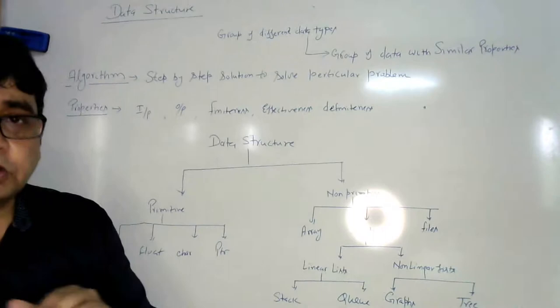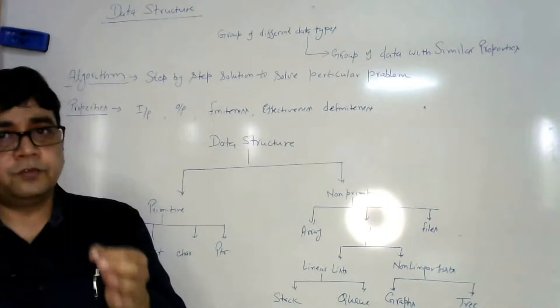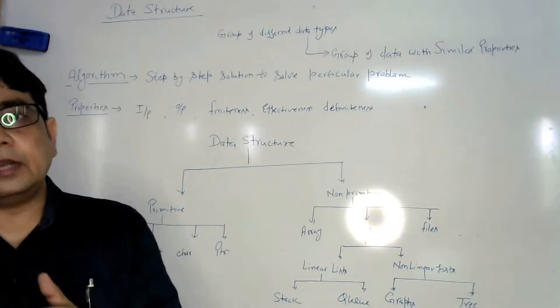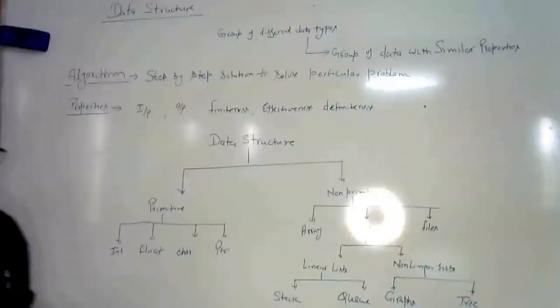What is the algorithm? How will you define an algorithm? Whenever we are going to write a program, the first step is to write an algorithm for that. Then we will write the flowchart, draw the flowchart for that problem. And after that we write the pseudocode and then we convert that pseudocode into a programming language.